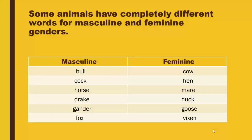Some animals have completely different words for masculine and feminine genders. More examples: Masculine: bull — Feminine: cow. Masculine: cock — Feminine: hen. Masculine: horse — Feminine: mare. Masculine: drake — Feminine: duck. Masculine: gander — Feminine: goose. Masculine: fox — Feminine: vixen.